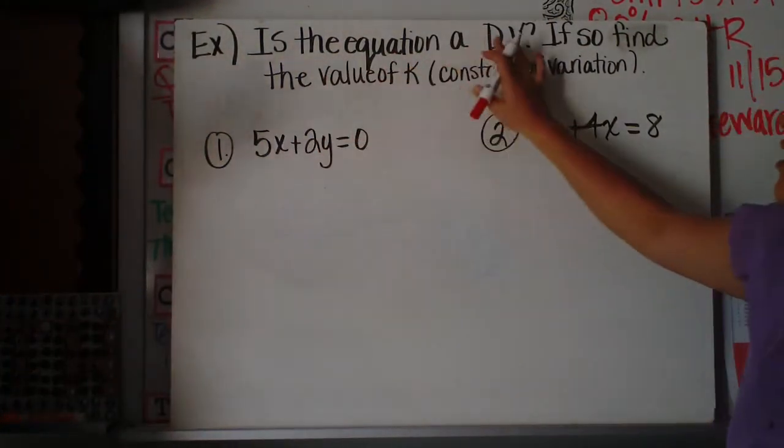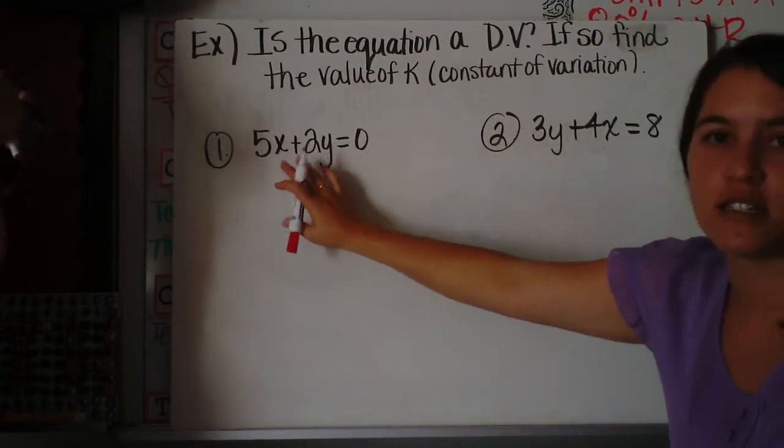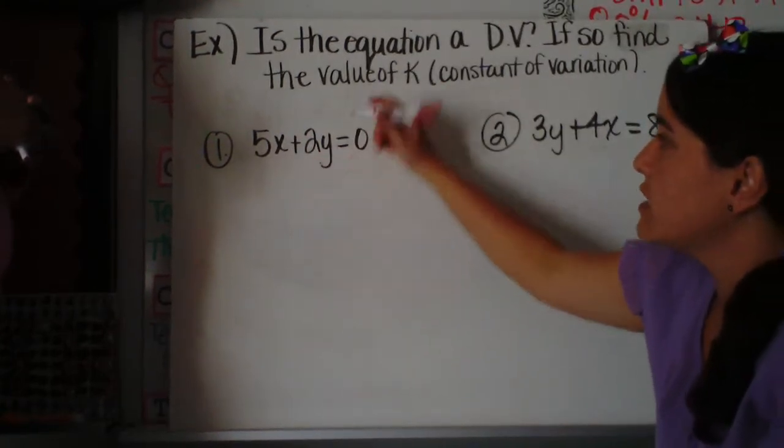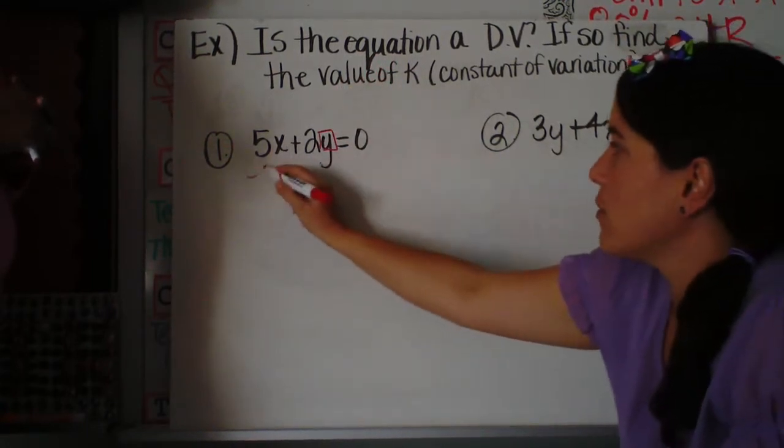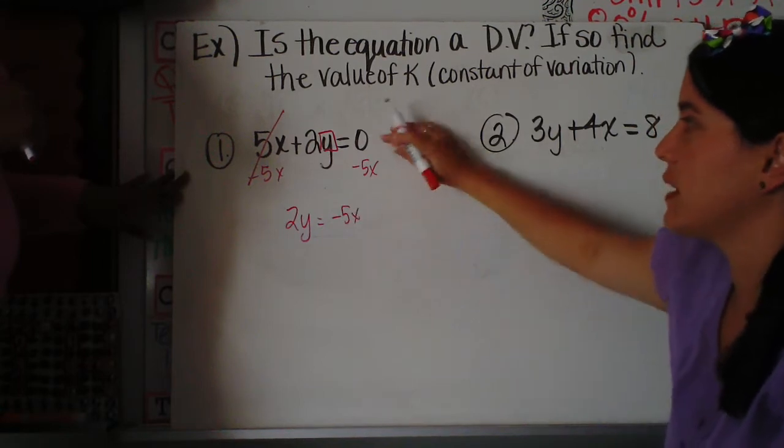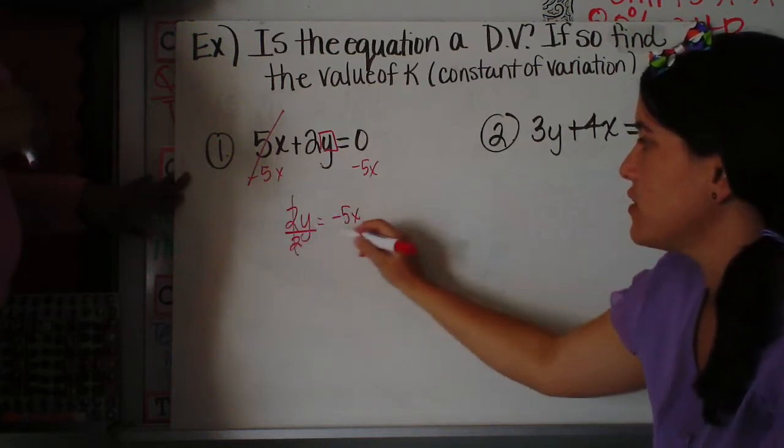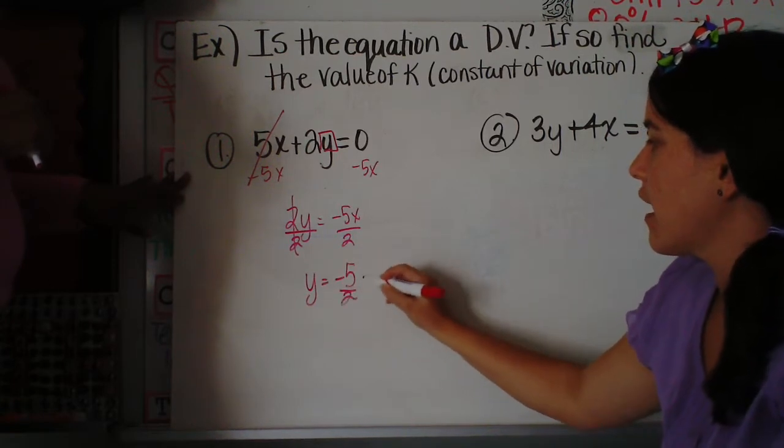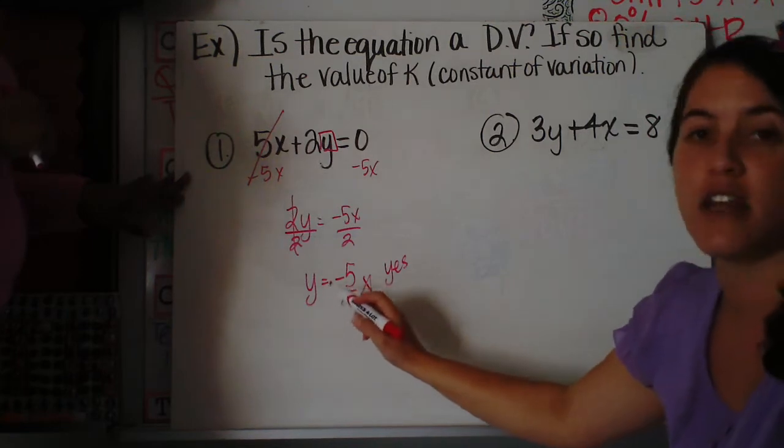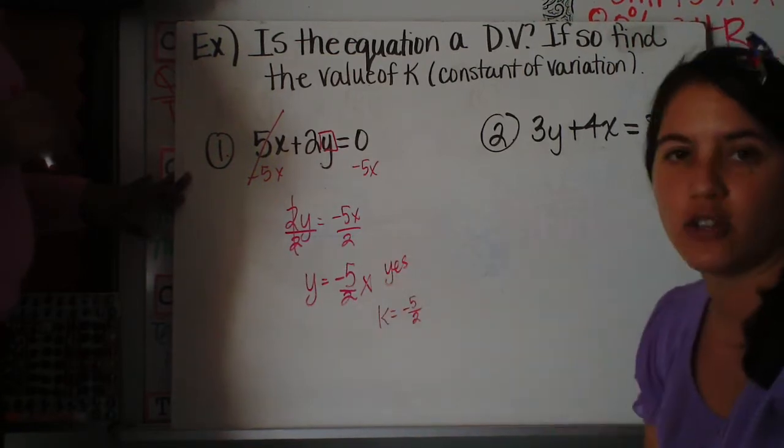So a few examples. Is the equation a direct variation? If so, find the value of k. We're going to find the constant of variation. So in the first example, it doesn't start out with y equals, so we need to solve for y. This is when you would use your literal equations lesson from last unit. We need to get y alone, so I need to move my 5x over by subtracting 5x from both sides. And now I get 2y equals negative 5x, because 0 minus 5x is going to be negative 5x. I still need to get y by itself, so I'm going to divide both sides by 2. And y equals negative 5x over 2. The question says, is the equation a direct variation? Yes, it is, because it's in the form y equals kx. And my k, my constant of variation, is going to be negative 5 over 2, that value in front of the x.